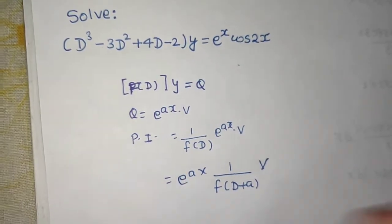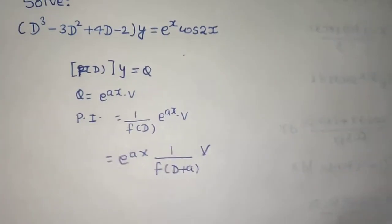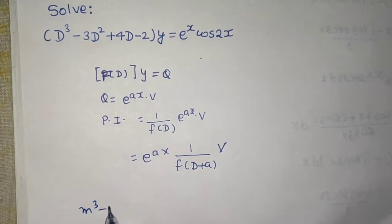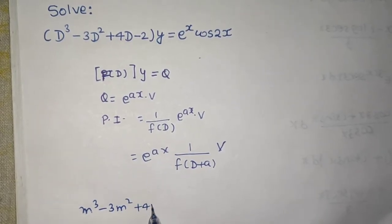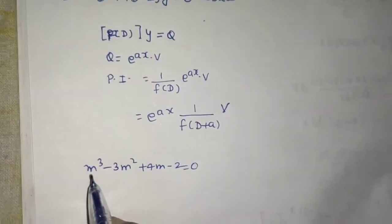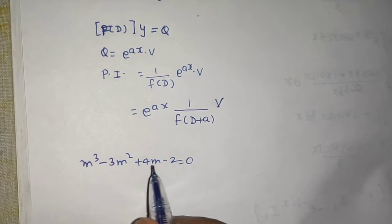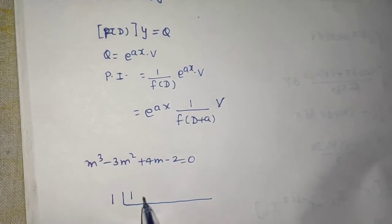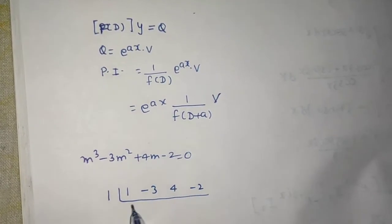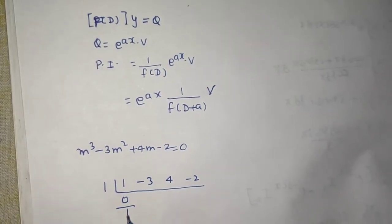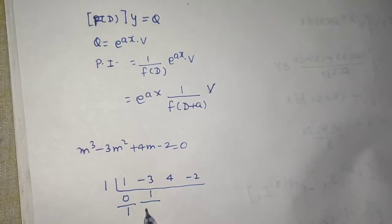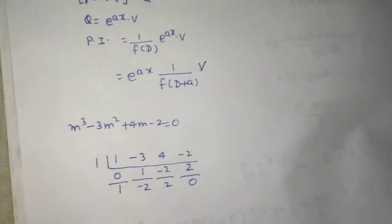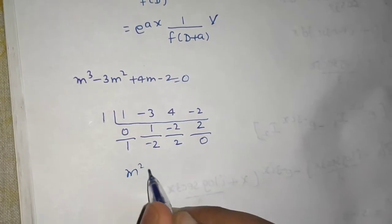First, let's find the complementary function. Convert from D-form to the auxiliary equation: m³ - 3m² + 4m - 2 = 0. Testing m=1: 1 - 3 + 4 - 2 = 0, so 1 is a root. Write the coefficients 1, -3, 4, -2 and perform synthetic division. Adding down: 1, then 1·1=1, giving -2; then 1·(-2)=-2, giving 2; then 1·2=2, giving 0. The quotient is m² - 2m + 2.